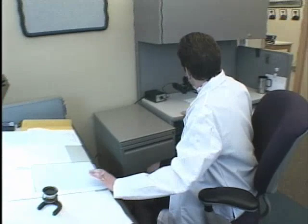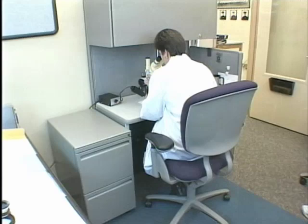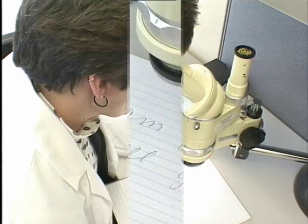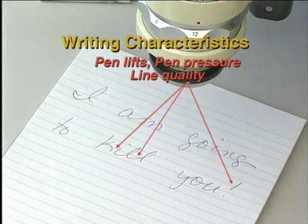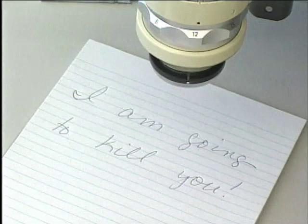Using tools that include the magnifying glass and the microscope, along with the examiner's experience and knowledge, the samples are compared to the questioned document. Characteristics the examiner may take into consideration are beginning, connecting, and ending strokes, pen lifts, pen pressure, line quality, letter formation, spacing and proportions, baseline relationship, dotting the I's and crossing the T's, and the general overall appearance of the writing.